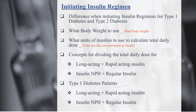We need to know what units of insulin are used to calculate the total daily dose — typically the concentration unit of insulin. Know the concepts of dividing the total daily dose. For type 1 diabetes, they use long acting plus rapid acting insulin, and sometimes also insulin NPH plus regular insulin.